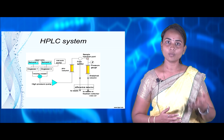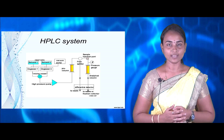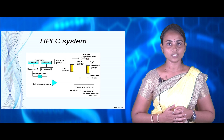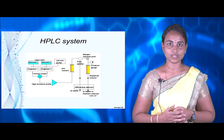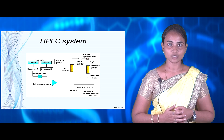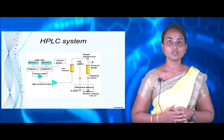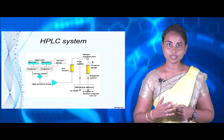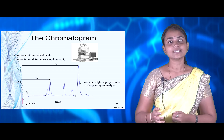In the sample injection port, both the solvent and the sample get mixed and then enter the pressure gauge to check various pressure ranges. This is then connected to the analytical column, where based on partition behavior the different particles get separated out. Finally, this is connected to the detector where the final chromatogram of different samples can be clearly viewed.